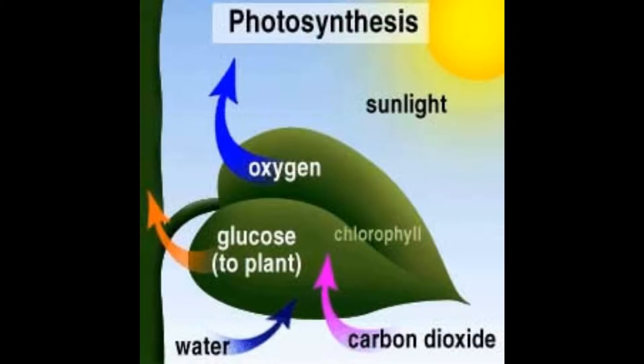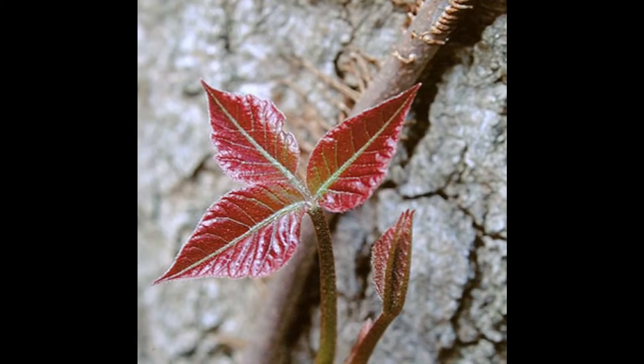Poison ivy is an autotroph, which means it makes its own food. Like other plants, poison ivy does this by using the process of photosynthesis. During this process, the chloroplasts in the leaves soak in the sunlight and turn it into nutrients and energy that the plant needs in order to survive and grow.